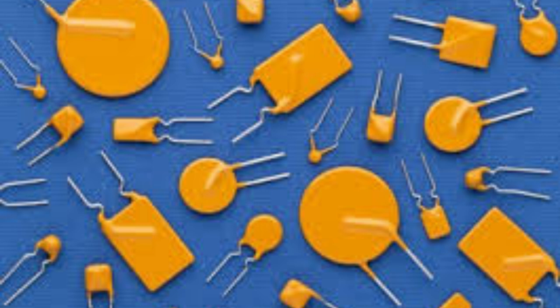Capacitors can be connected in series or parallel to increase or decrease the total capacitance, respectively. When capacitors are connected in parallel, the total capacitance is equal to the sum of the individual capacitances. When capacitors are connected in series, the total capacitance is given by the inverse of the sum of the reciprocals of the individual capacitances.